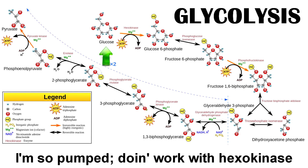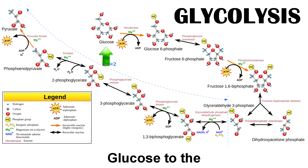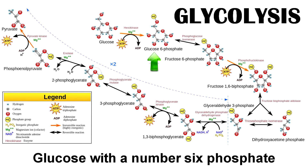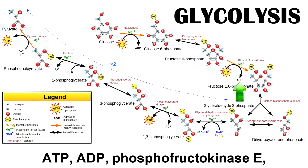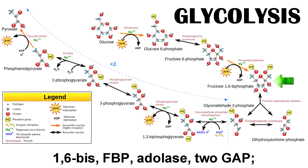I'm in that prep phase, I'm so pumped doing work with hexokinase. Glucose to the glucose-6-phosphate. PGI to that fructose-6-phosphate. ATP, ADP, phosphofructokinase, fructose-1,6-bisphosphate. Aldolase to GAP.